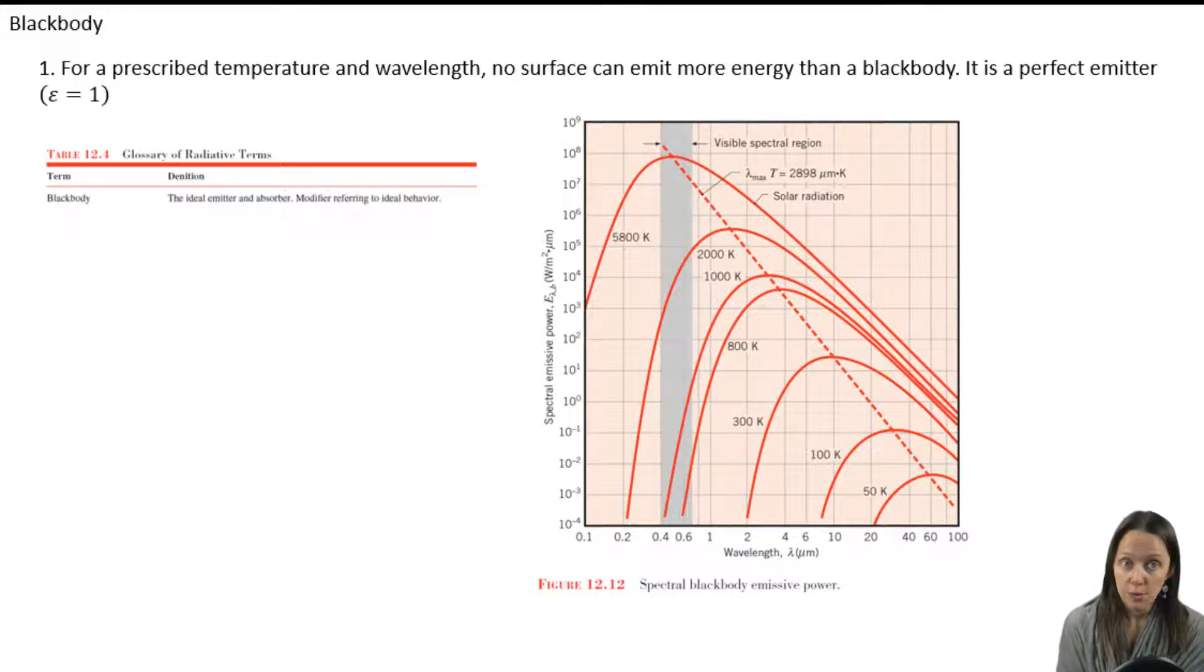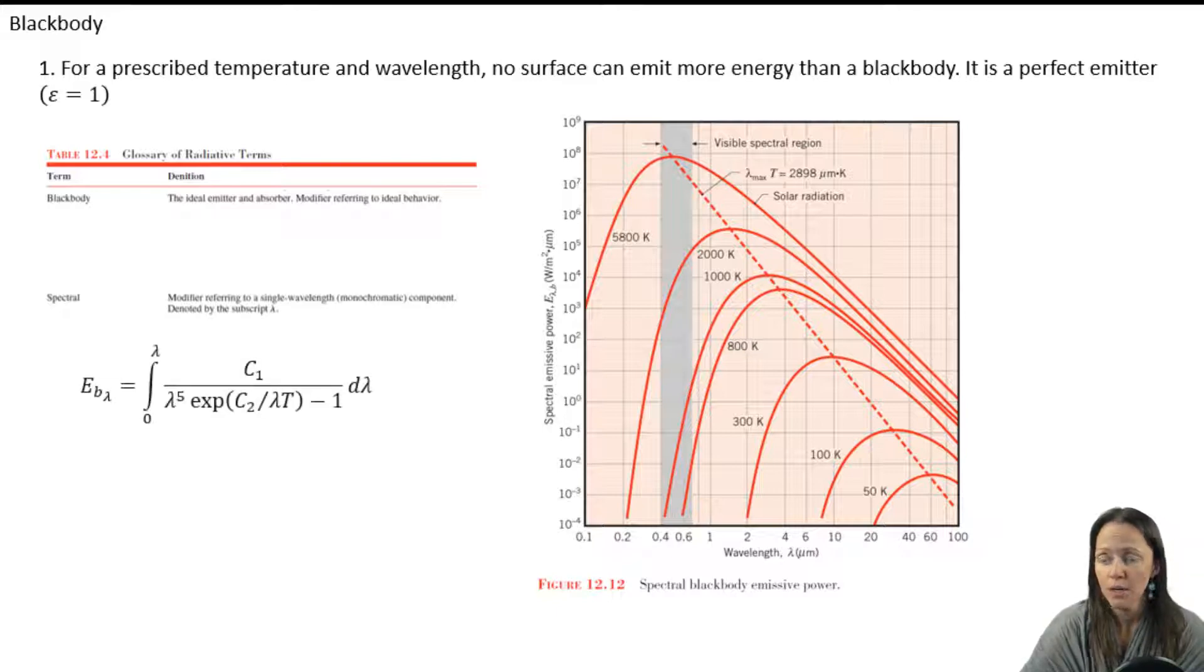Also note those two subscripts. B is for black body. Lambda indicates that it's spectral emissive power. Pay attention to the language here. It's very important. Spectral just means that it's wavelength dependent. We're talking about something at a particular wavelength. So here's the formula for the spectral emissive power. C1 and C2 are constants. Figure 12.12 graphs that as a function of lambda of wavelength.